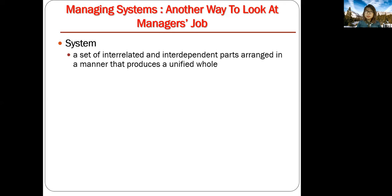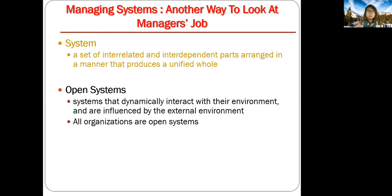There are two types of systems. We have open systems — these are systems that dynamically interact with the environment and are influenced by the external environment. All organizations are open systems. Like all of us, we are exposed to open systems.